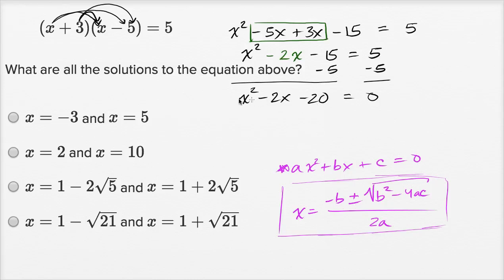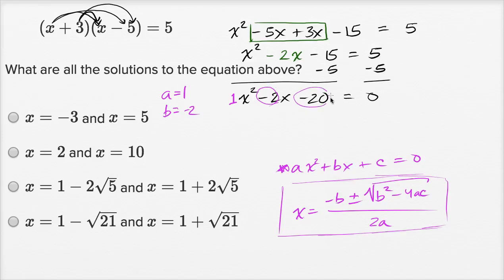So in this context, our a is one — it's the coefficient implicitly out there, so a equals 1. b is negative two — that's this coefficient right over there. And c is negative 20.